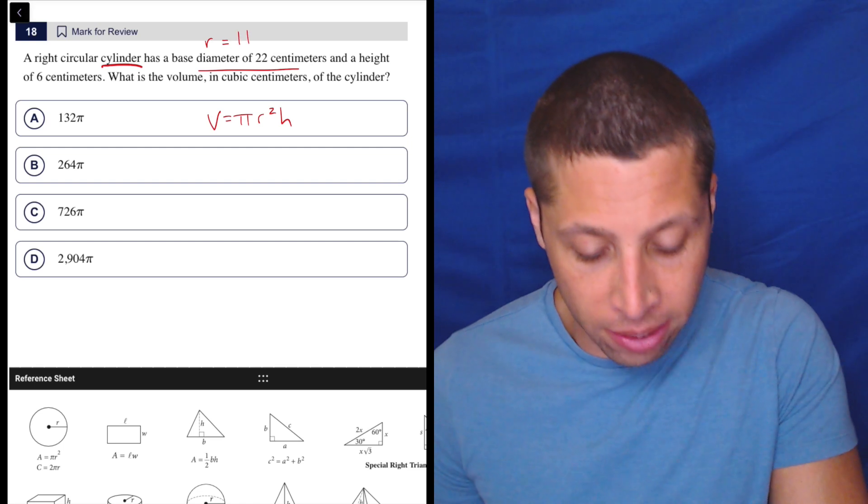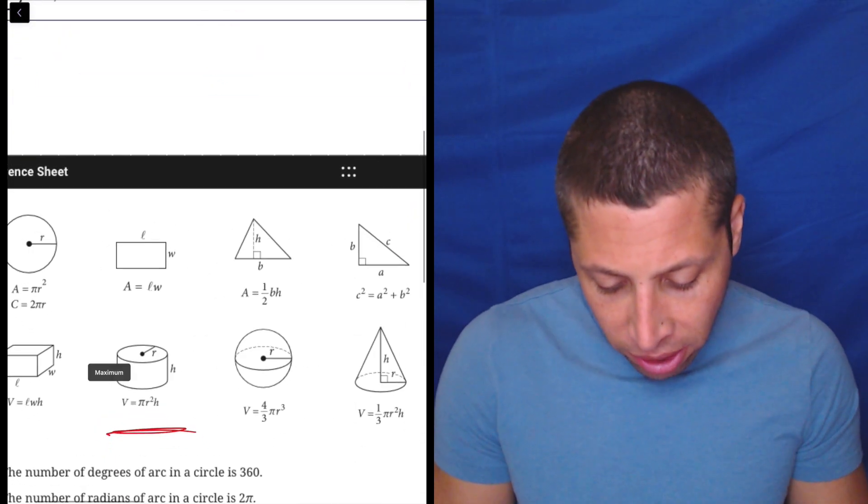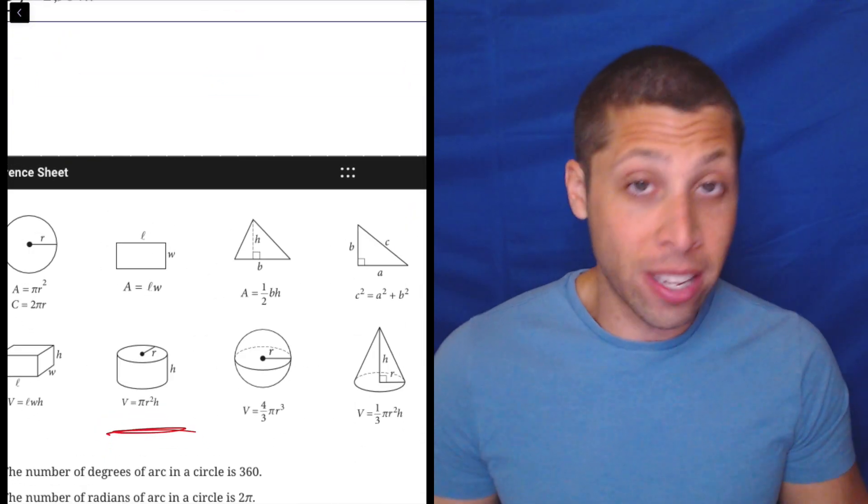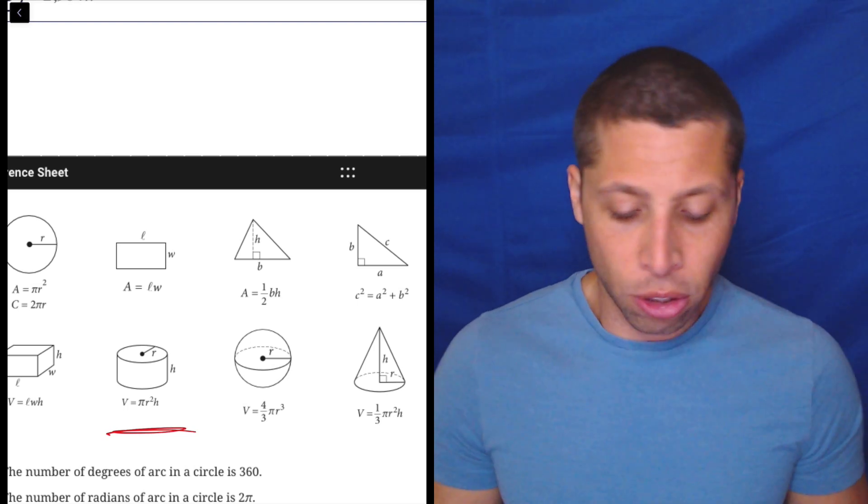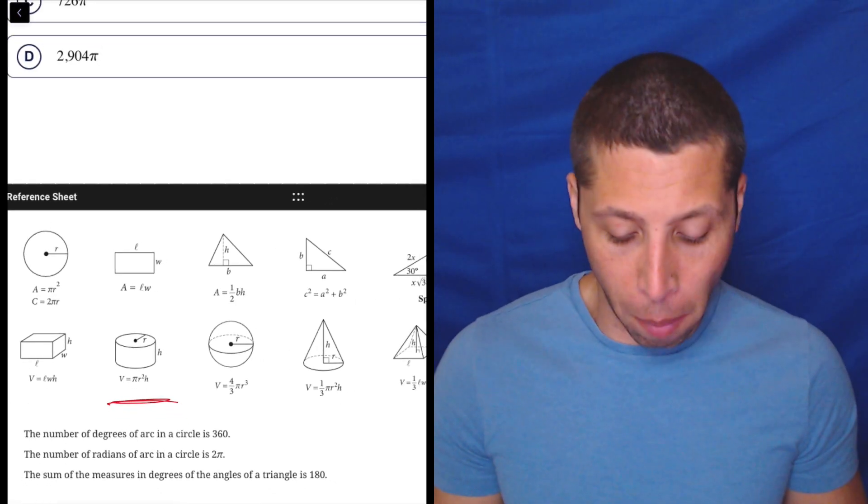So there you go. Radius is 11. And it kind of shows us this on the picture, right? We can see that the radius is going from the center to the outside, not directly across. So you get a little bit of a reminder there.